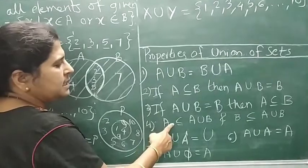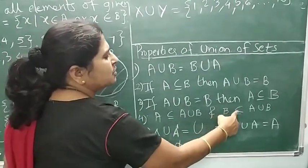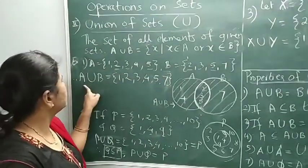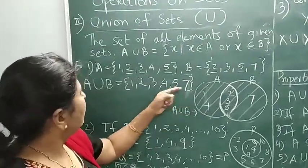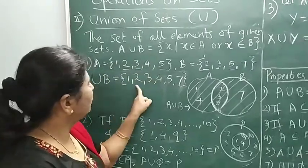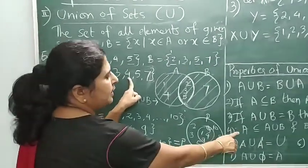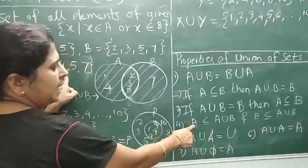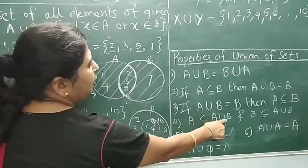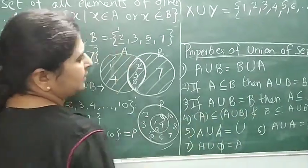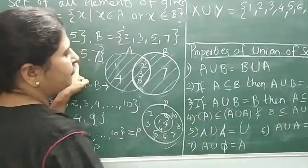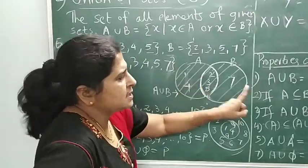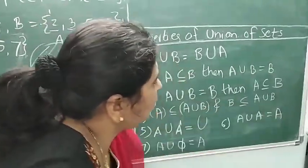A is subset of A union B, as well as B is also subset of A union B. What is the meaning? For these two sets A and B, this is the A union B set. All elements of set A are elements of this union set. All elements of A are elements of A union B, so A is a subset of A union B. Similarly, all elements of set B are elements of A union B. Hence B is subset of A union B.